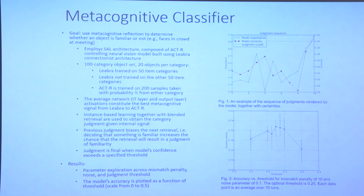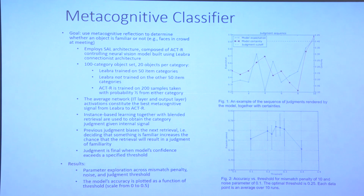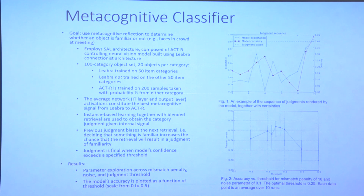One problem at the interface is that the visual module is pre-trained to output particular categories of objects linked to symbolic representations in the cognitive model, but is forced to output one of those categories even when it's a bad fit. Sometimes something doesn't really look like the trained category but the module doesn't know that—it just forces the output. We looked at the dynamics of the neural network to extract a quantity that could tell whether recognition had been successful.